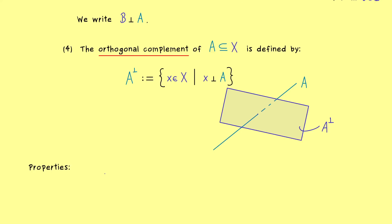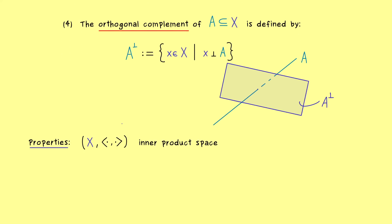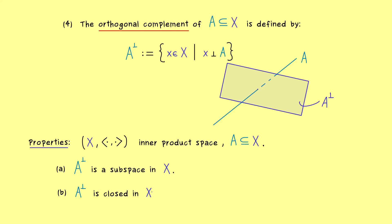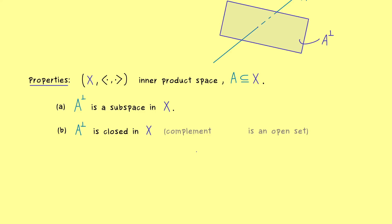We can collect these and related results as properties of the orthogonal complement, which hold for any inner product space X and any subset A inside it. First, A-perp, the orthogonal complement of A, is always a subspace in X. From the topological structure, it is also a closed set inside our inner product space — closed with respect to the induced norm and induced metric. This means the complement X without A-perp is an open set, where openness is defined via epsilon balls as in every metric space. Since an inner product induces a norm and every norm induces a metric, this term is well defined in our inner product space.